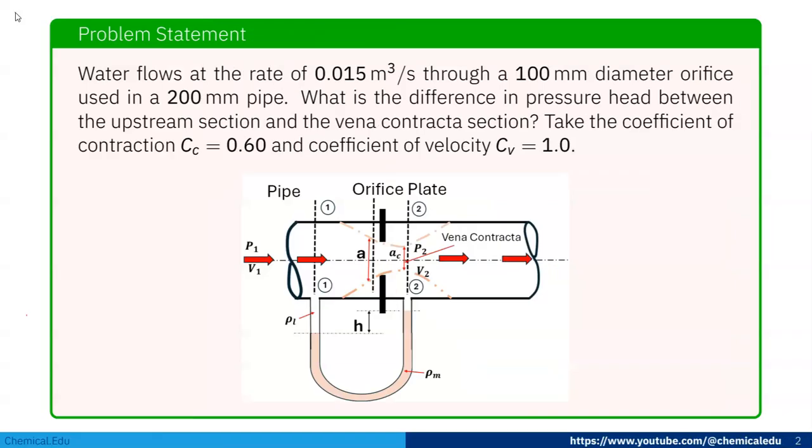Water flows at a rate of 0.015 m³/s through a 100 mm diameter orifice used in a 200 mm pipe. What is the difference in pressure head between the upstream section and the vena contracta section? Take the coefficient of contraction Cc = 0.60 and coefficient of velocity Cv = 1.0.